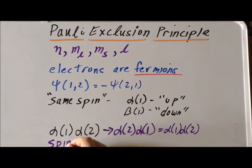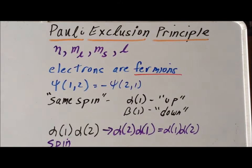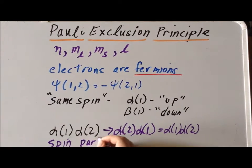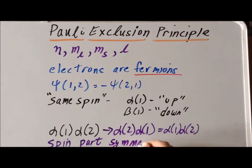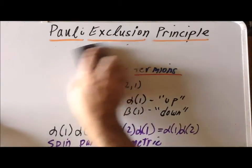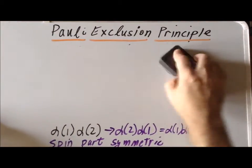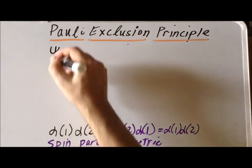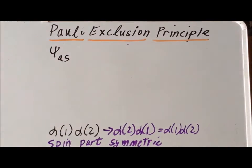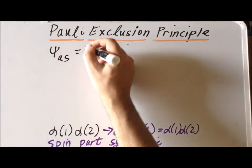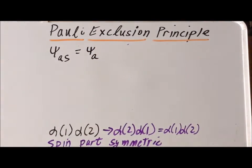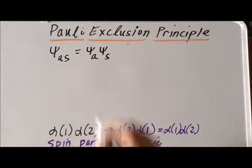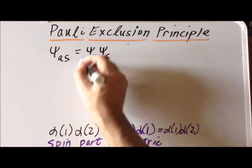We see that the spin part is symmetric. But we know that the overall wave function for an electron has to be anti-symmetric, because we have two fermions — electrons are fermions. So we can get an overall wave function that is anti-symmetric by multiplying an anti-symmetric function times a symmetric function, since anti-symmetric times symmetric gives an overall anti-symmetric wave function.